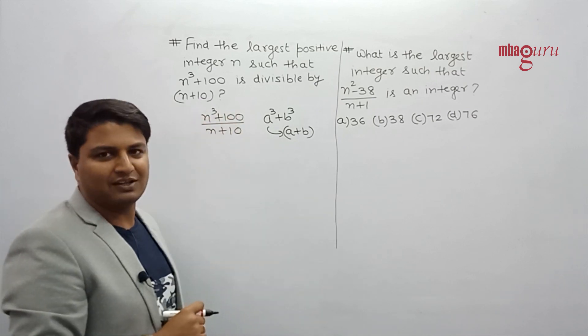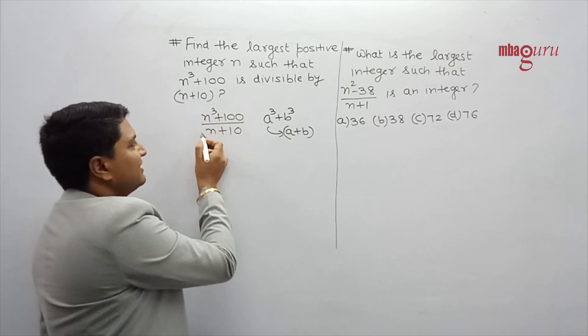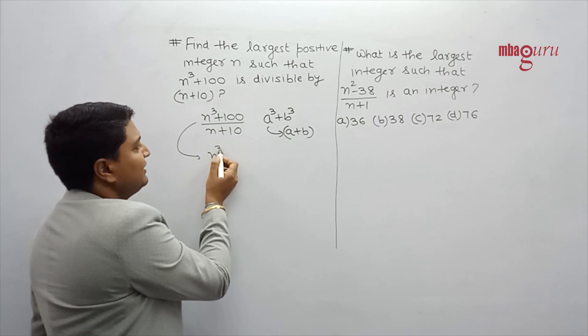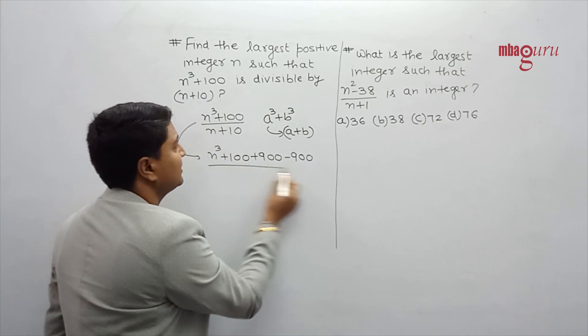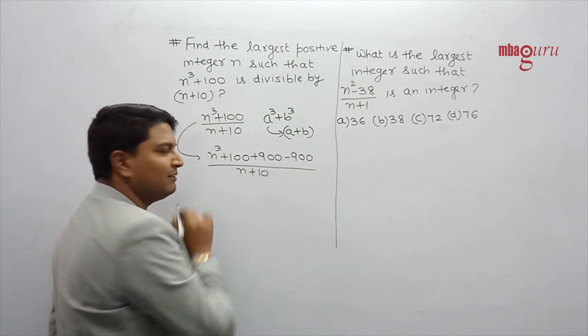So why do we make this a squared plus b squared form? So under n plus 10, can I write this number n squared plus 100 plus 900 minus 900? Tell me first. Because you can see what we can do first.